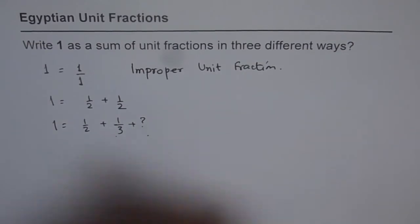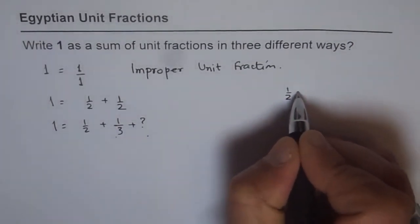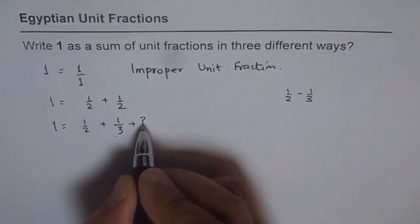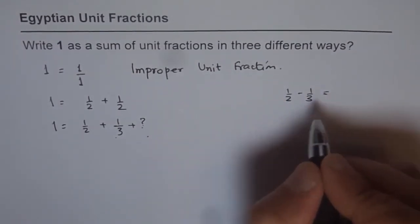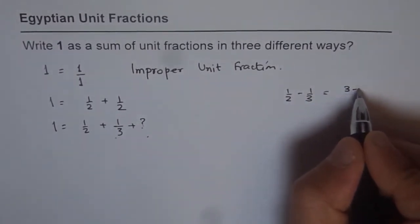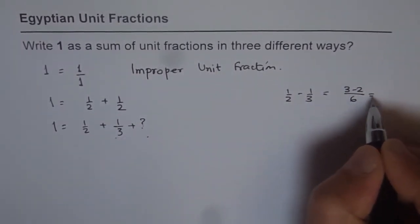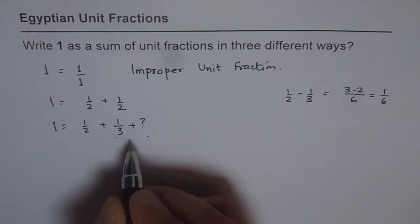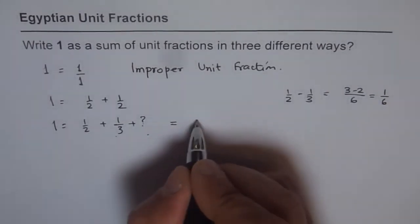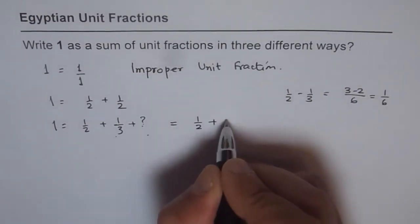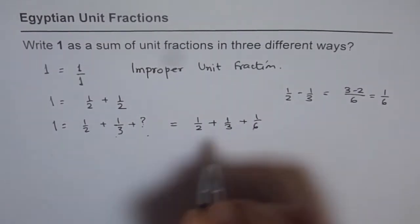Therefore, we're looking for half minus 1 over 3. That should come here. So it should be 3 minus 2 over 6, which is 1 over 6. So that should work. So it could be half plus 1 over 3 plus 1 over 6.